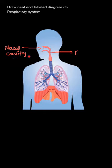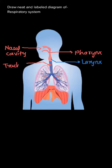Through this nasal cavity, air enters inside the body during inhalation. Then comes the pharynx, larynx, and trachea. This part is the pharynx part, this is the larynx part, and this is the trachea.